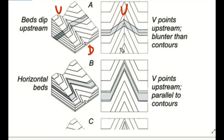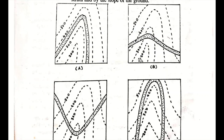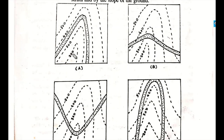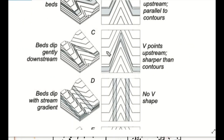The contour lines are at 200m, 300m, 400m, and 500m. This point is on the upstream side, which has a gentle slope. In the second figure, which shows a horizontal bed, the outcrop runs parallel to the contour. The upstream side and downstream side are identified, and the outcrop is parallel to the contour lines.